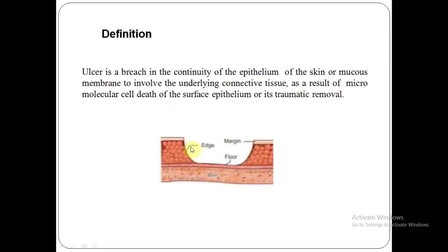These are the various parts of an ulcer. This is the margin, or the junction between the surface and the ulcer proper. This part is called the edge, and this is the floor which is visible, and this is the non-visible part called the base — the ulcer actually rests on the base. What you see here is the epithelium, and this part is the connective tissue.